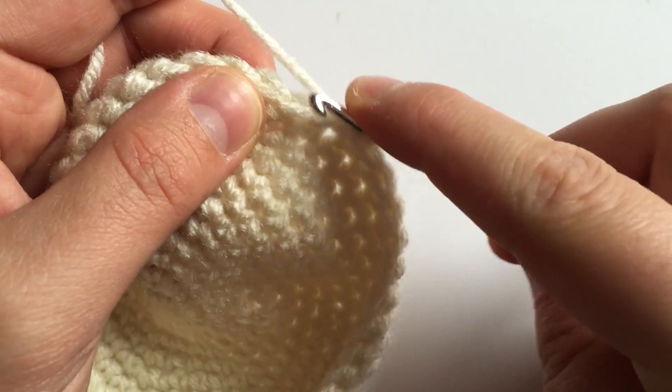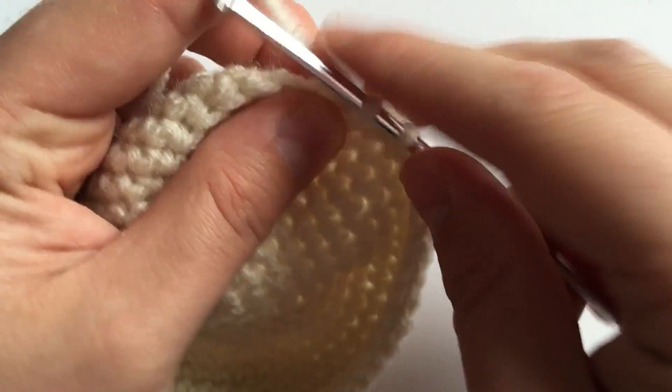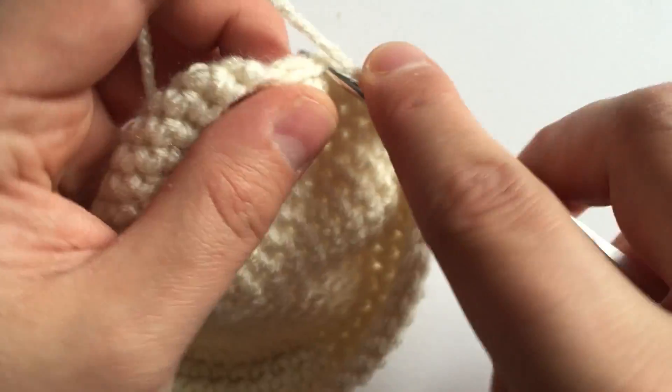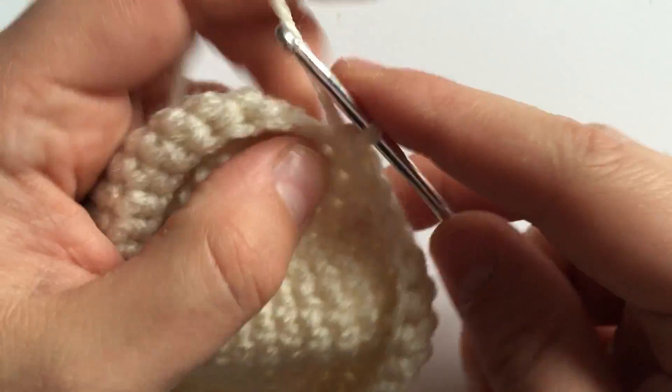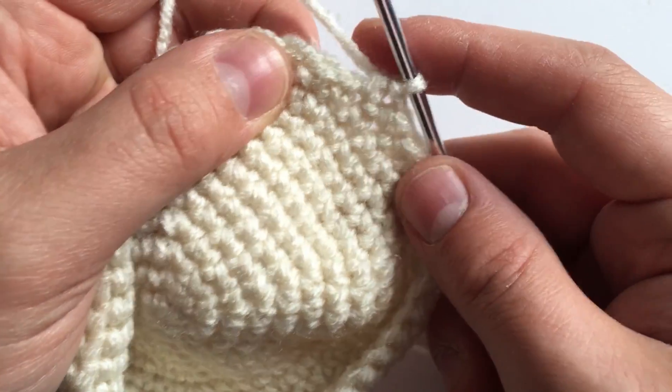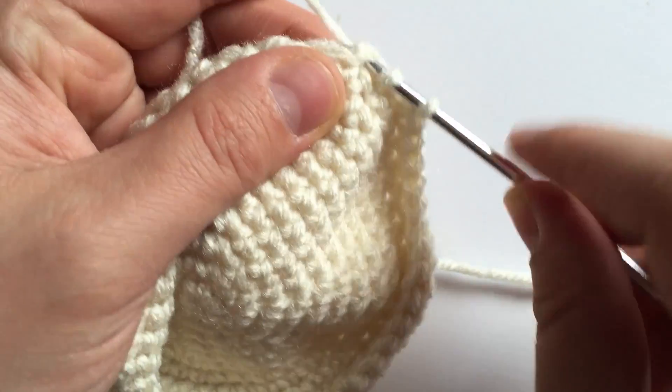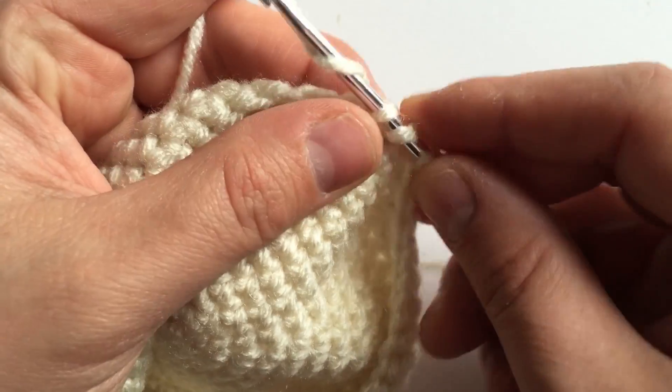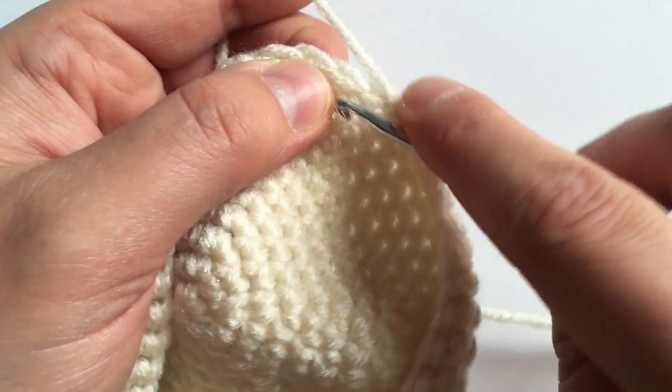The first step is to single crochet five and then decrease. Let's look at that decrease close up: three, four, five, and a decrease. For the single crochet decrease, you're going to loop into one, pull it through, loop into the next, pull it through, cross over and pull through all three loops.